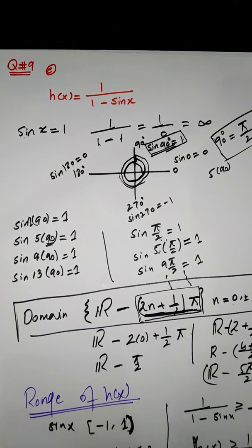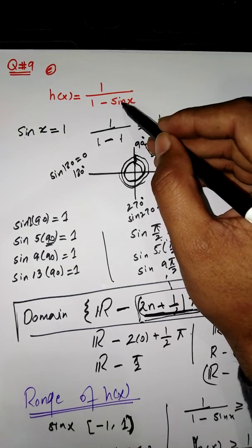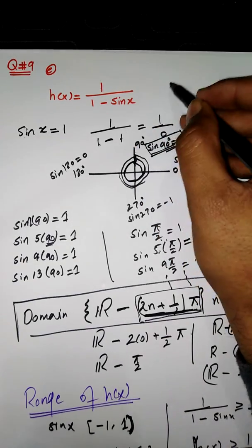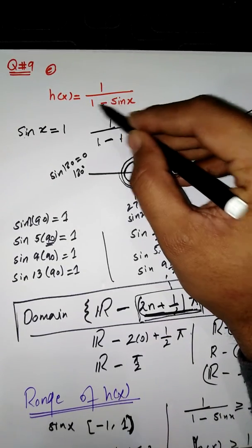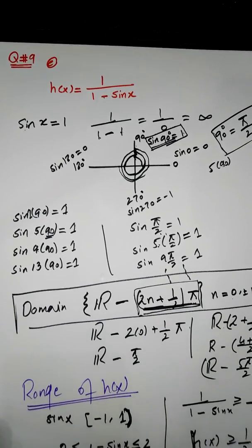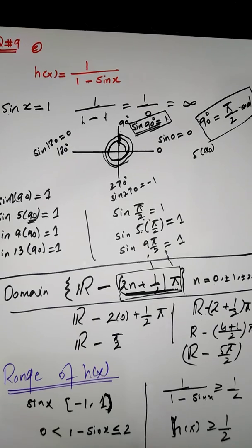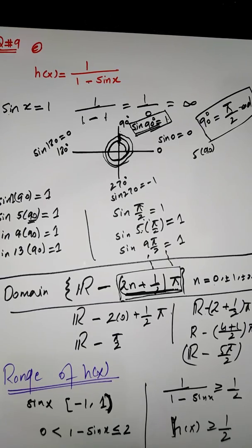So the range of our function is [1/2, ∞), because when sin x = -1, we get 1/(1 - (-1)) = 1/2, and it goes up from there. This is the range of the function. Finding domain and range of trigonometric functions may seem complicated, but once you understand it, you can solve similar questions at home. Please subscribe to my channel, press the notification bell, and share with your classmates. Thank you for watching.